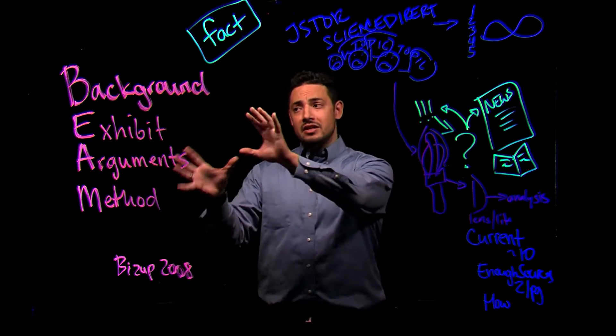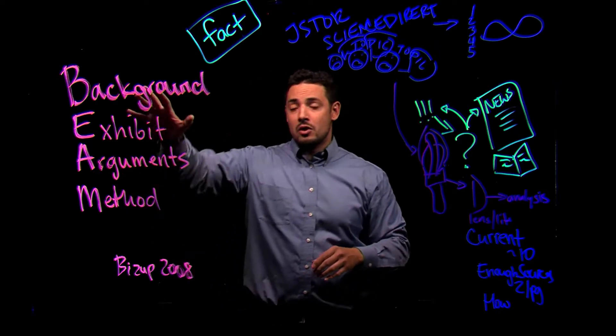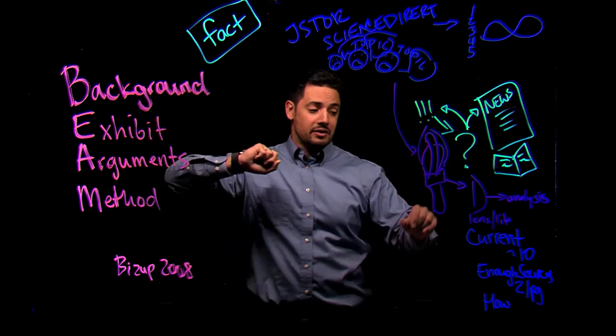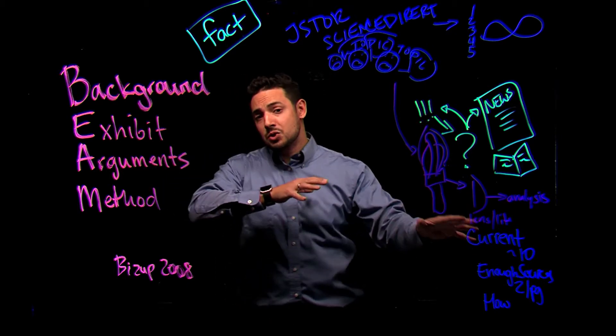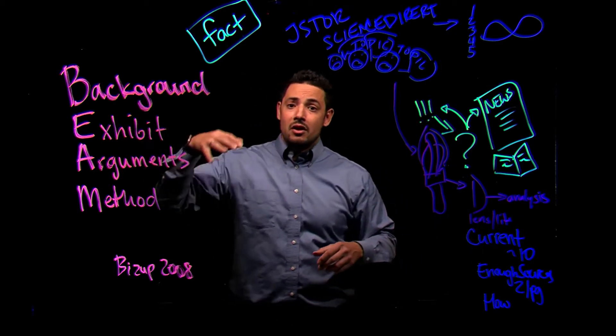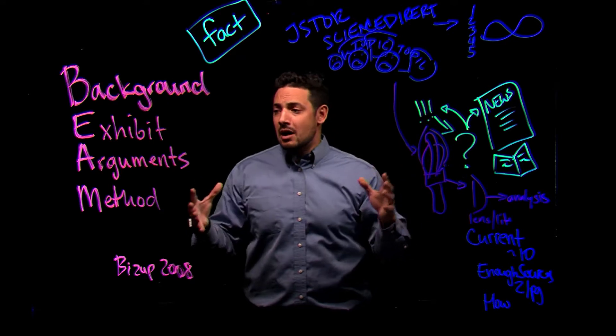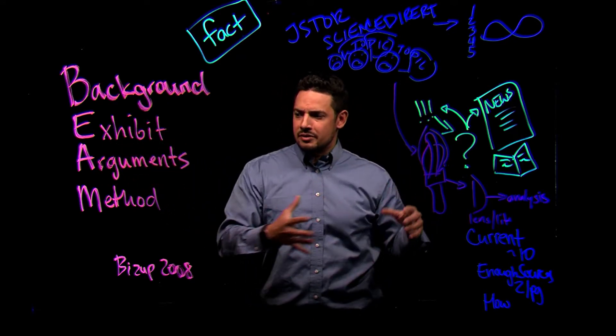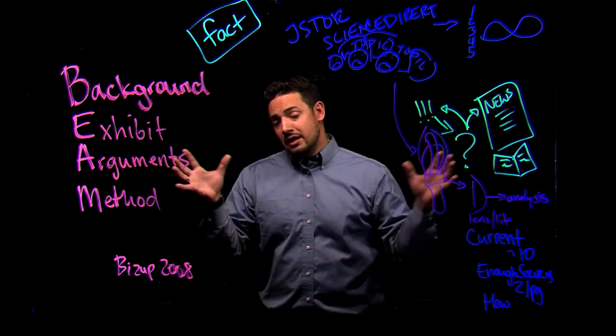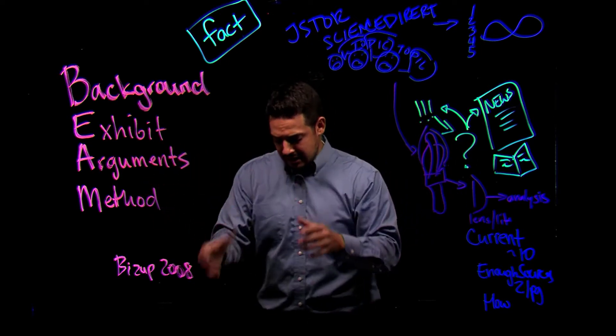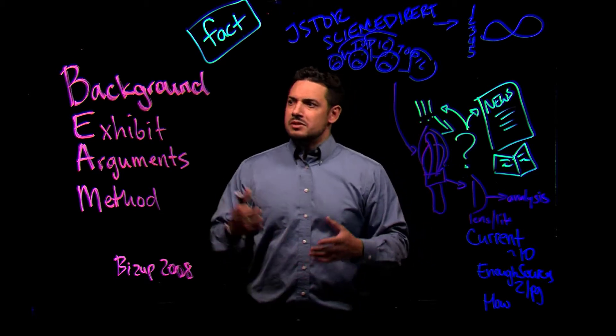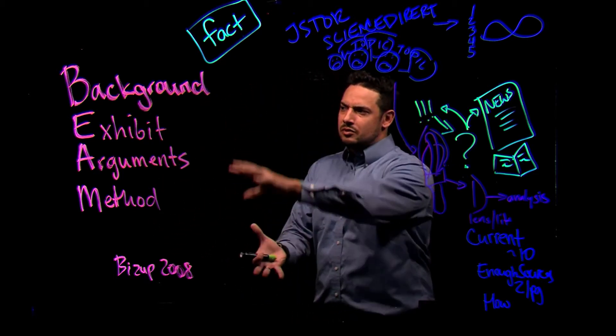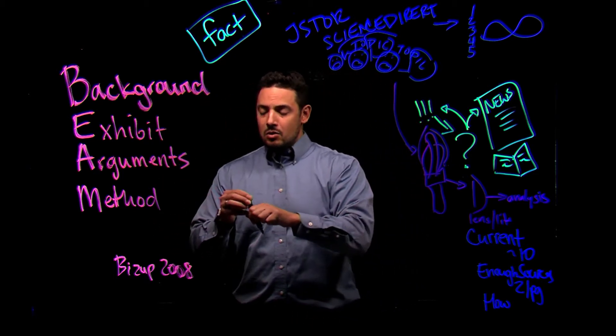So, once we've identified these different sources, we might have only one or two background sources, especially if we have a shorter research paper. Then we have our exhibit here to get us thinking about what our topic is. We have our different arguments there to acknowledge how people are thinking about it, as well as our method as that concept that helps bring it all together. So, the question then sometimes comes: what is a good example of thinking through how to put these in order?